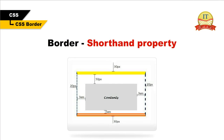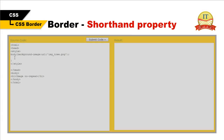Border shorthand property. As you can see from the previous examples, there are many properties to consider when dealing with borders. However, in order to shorten the code, it is possible to specify all the individual border properties in one property — this is called a shorthand property. Let us take a look at an example.